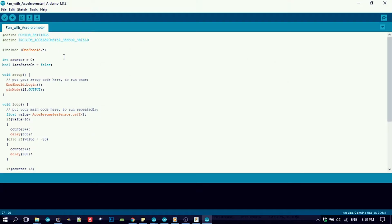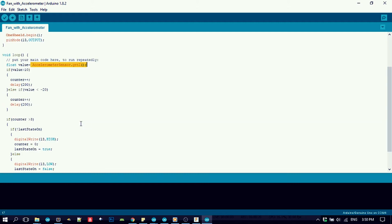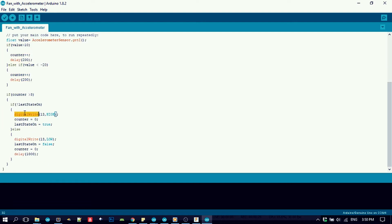So for the sketch I've included the accelerometer sensor sheet and of course the OneSheet library. In the setup function I've called the OneSheet.begin to initialize the library, and in the loop I've called the accelerometer.getZ to grab the linear acceleration of my phone Z axis and made some simple counters and checks to turn on or off the fan for each successful gesture.